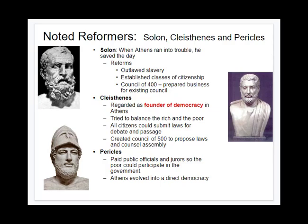The second key figure is Cleisthenes, who beginning in 508 BC introduced further reforms, taking democracy a step further. He is generally regarded as the founder of democracy, making Athens a full democracy by reorganizing the assembly to balance the power of the rich and the poor and allowing all citizens to submit laws for debate and passage. Cleisthenes created the Council of 500, which proposed laws and gave counsel to the assembly, with members chosen at random from any citizen. Even so, only one-fifth of Athenian residents were actual citizens.